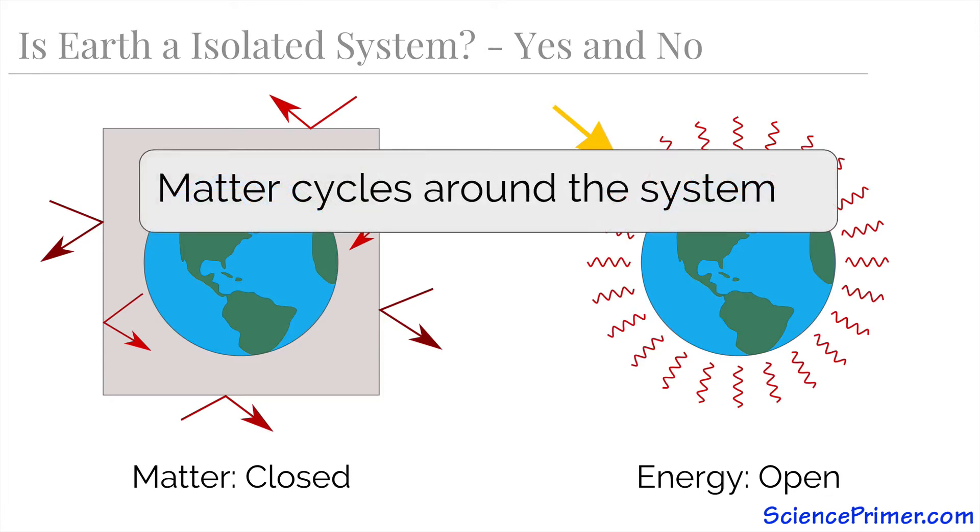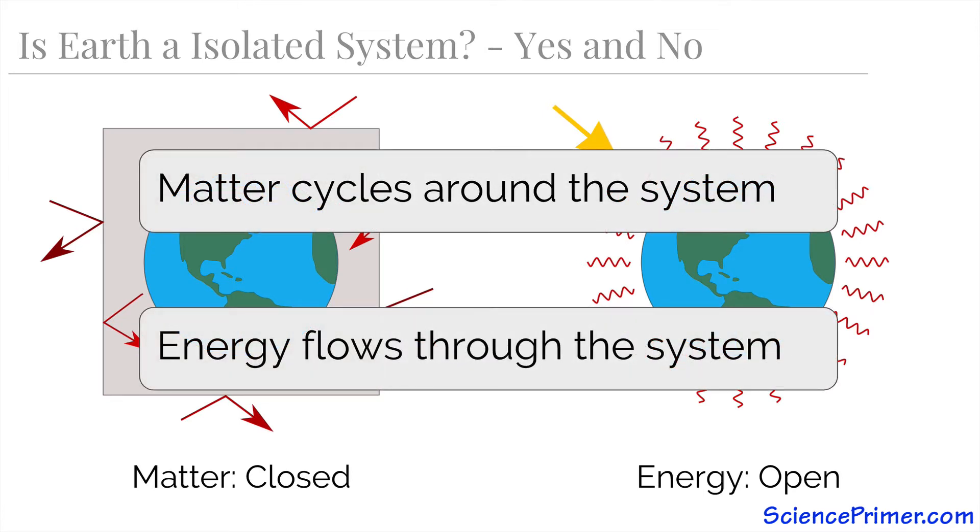So matter cycles around the system but never goes away, and energy is constantly flowing into and then quickly back out again.